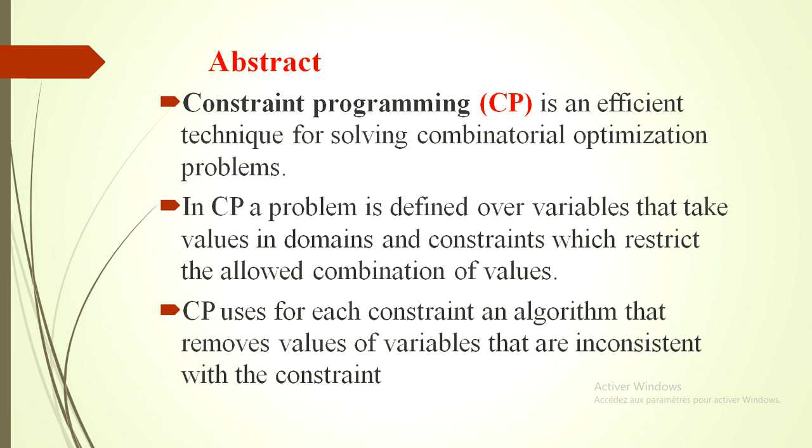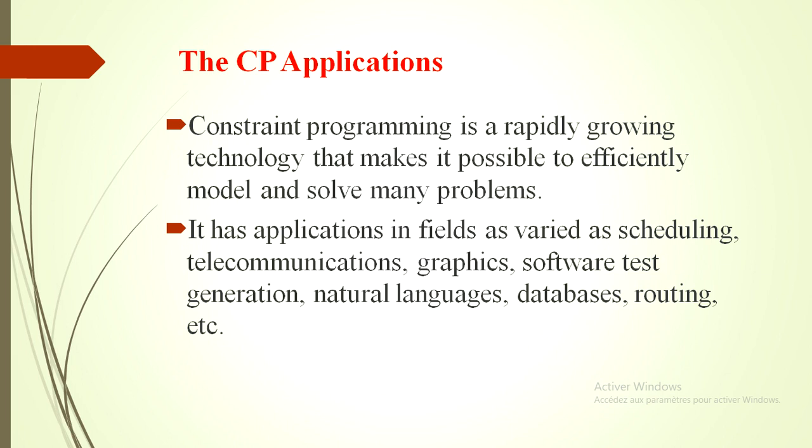Constraint Programming is an efficient technique for solving combinatorial optimization problems. In CP, a problem is defined over variables that take values in domains and constraints which restrict the allowed combination of values. CP uses for each constraint an algorithm that removes values or variables that are inconsistent with the constraints. This is the principle of the resolution. We will see the different algorithms that resolve a model of Constraint Programming.